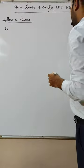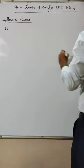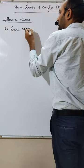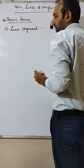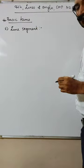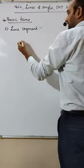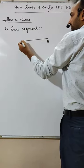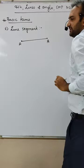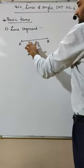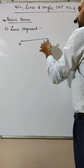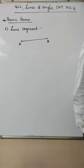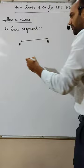We are dealing with the basic terms first. The first basic term: what do you mean by line segment? A line segment is a straight line present between two points. That is called a line segment.